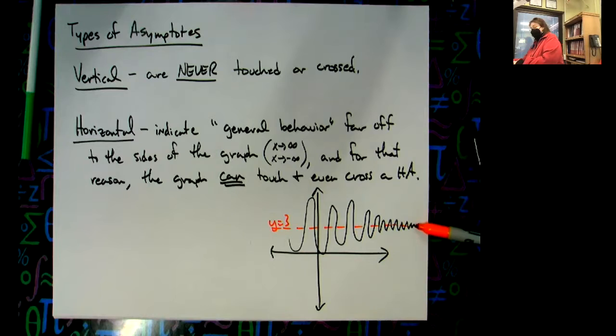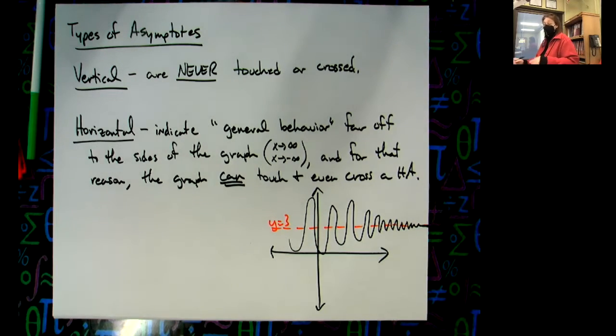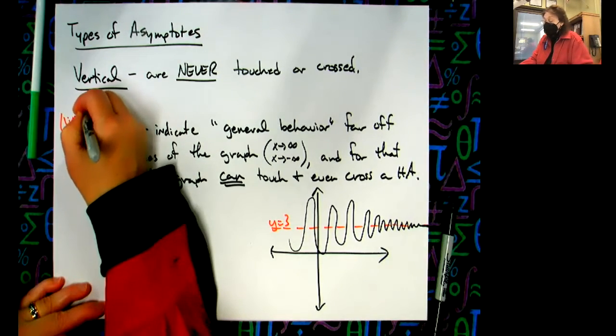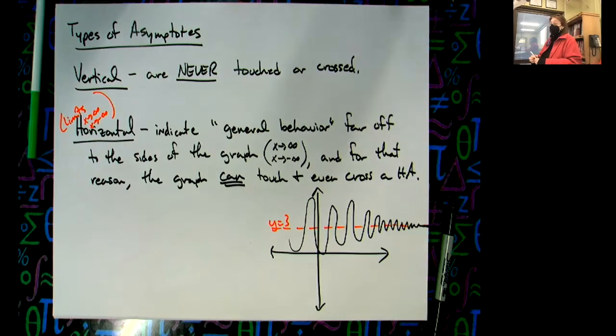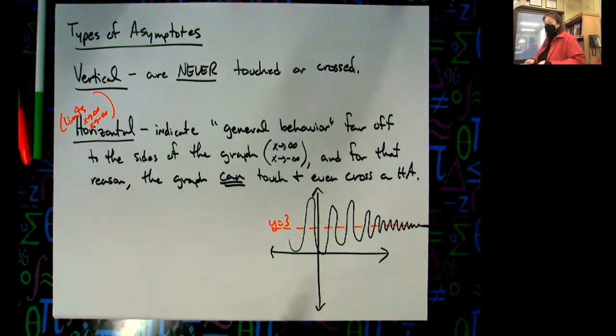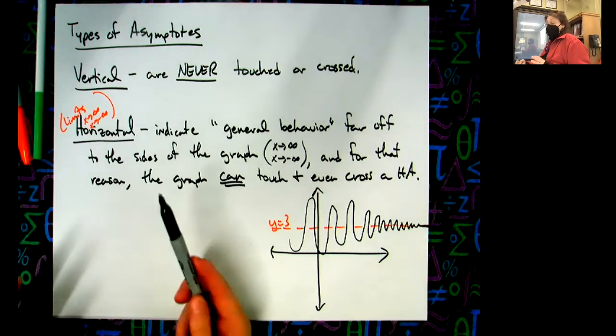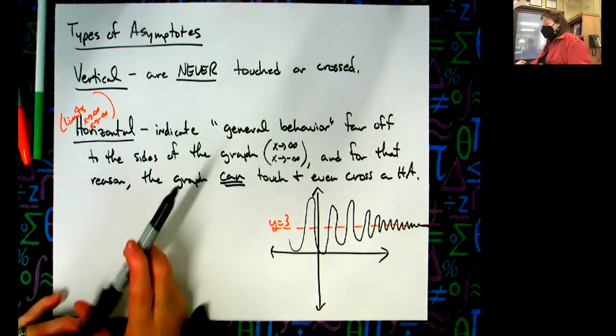So almost very similar to that limit notation, there will be a connection next year between using limits as x approaches infinity and x approaches negative infinity to find these horizontal asymptotes. We will do that in calculus next year. We will use limits - and we've already started looking at limits from pictures and graphs - we will use those limits to find those horizontal and vertical asymptotes.